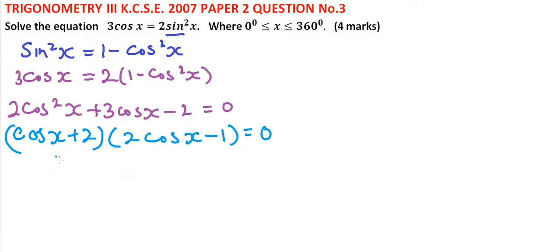So finally we get cos x equals minus 2 or 1 over 2, or a half. From there, we identify the angles.